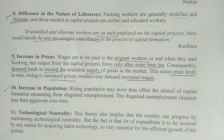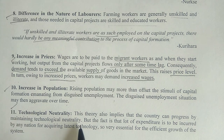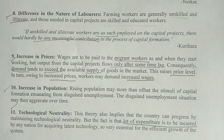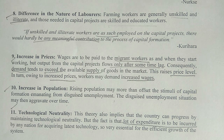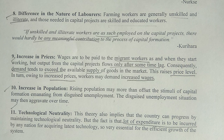The last criticism is technological neutrality. Nurkse's theory implies a country can progress while maintaining technological neutrality, but in fact a lot of expenditure must be incurred by any nation to acquire the latest technology, which is essential for efficient growth. Spending that much on technology would be very difficult for an underdeveloped country. This is why Nurkse's definition holds: 'a country is poor because it is poor.'